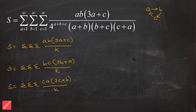Now we apply one more modification to each of these three summations. Since interchanging any two variables leaves the denominator unchanged, in the first summation I interchange b and c. We had the term 3a+c; now we want the term 3a+b, so interchanging b and c achieves that.